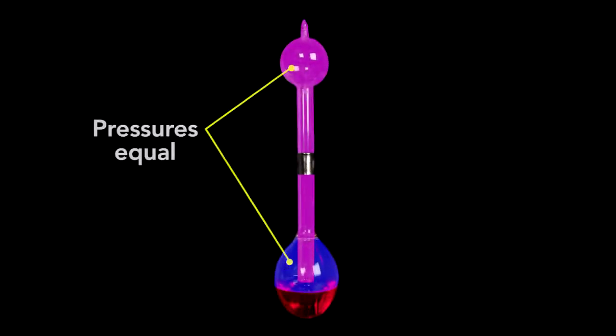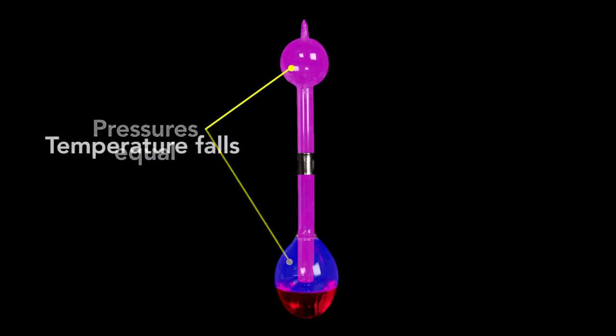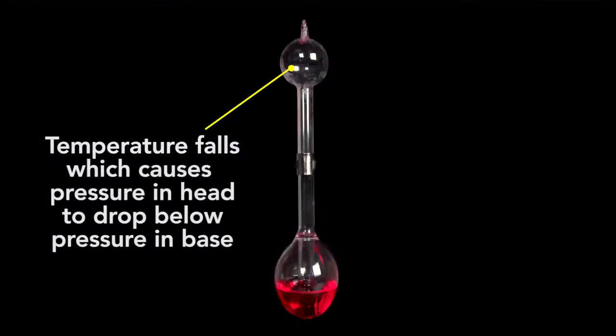So at rest the pressure in these two spaces are equal, but when the bird's beak is wet, the temperature falls, and as I'll explain in a moment, the pressure in the head drops below that in the base and the liquid rises.